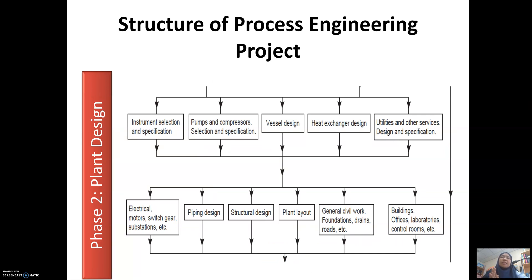This is phase two, which we call plant design. Plant design is not only designing the building of the factory — it consists of the equipment design. You also need to identify the auxiliary equipment design. Looking at this flow chart structure, you need to select instruments and determine the best specifications for those instruments.